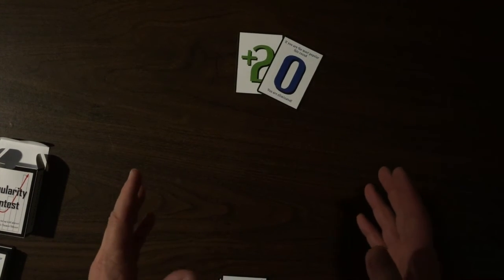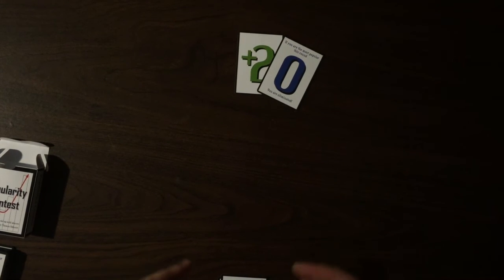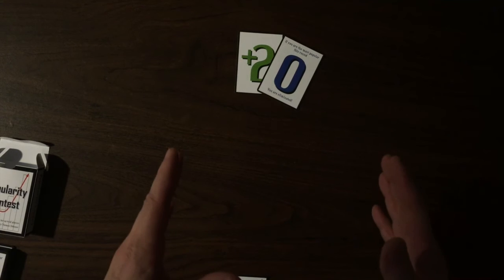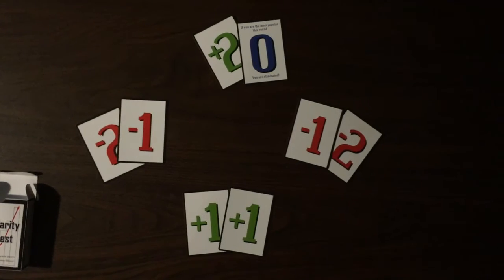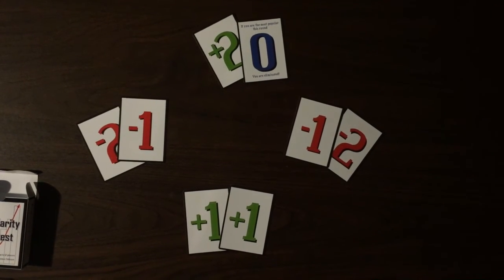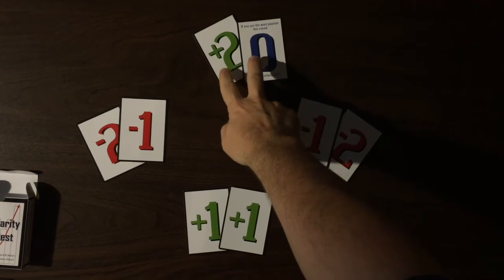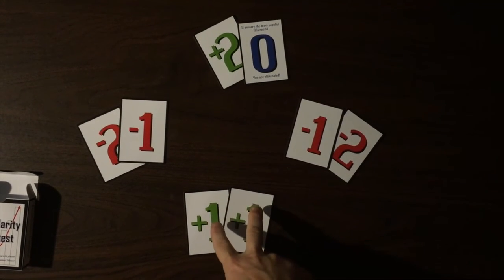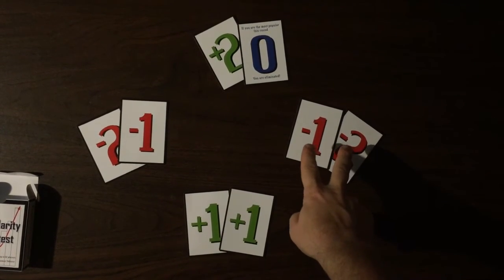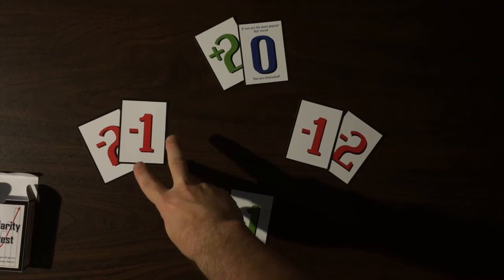Let's go through a quick sample round so that we can see how this works and we'll talk about some of the ways that people can be eliminated. In this situation, this player has two popularity, this player has two popularity, this one has negative three popularity, and this one has negative three popularity.